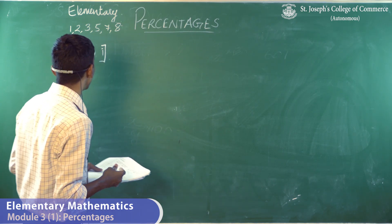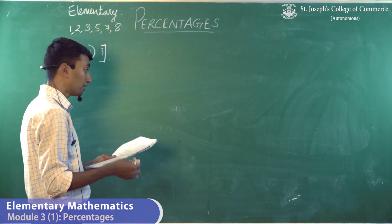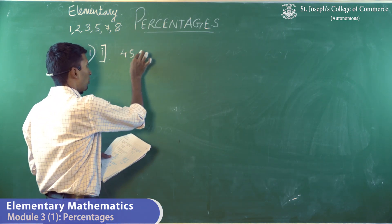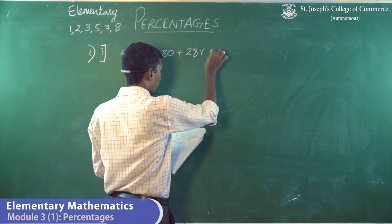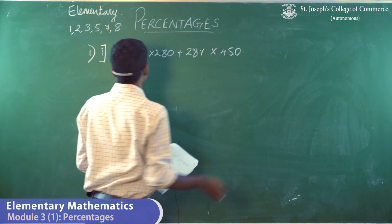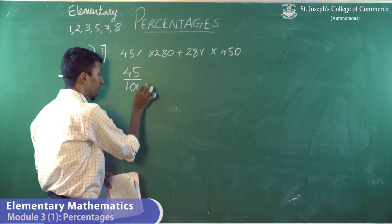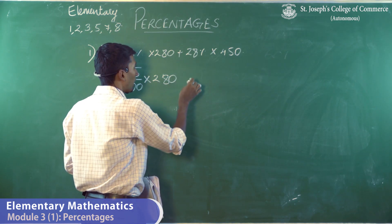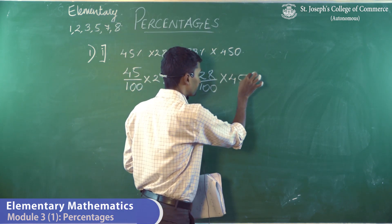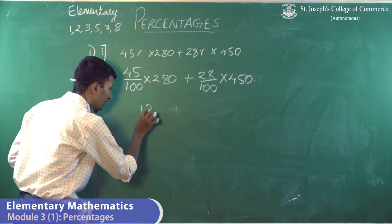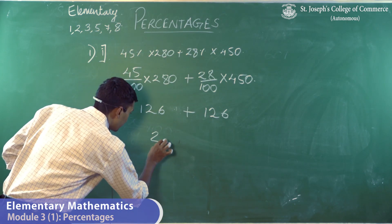We now move on to the sums under percentages. The first sum, part one: 45% of 280 plus 28% of 450. So 45/100 × 280 and 28/100 × 450. Solving it, you get 126 plus 126, which gives 252 as your answer.